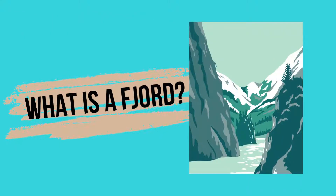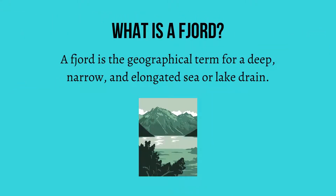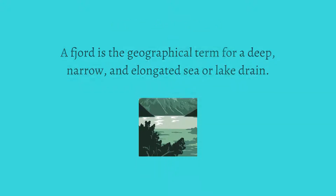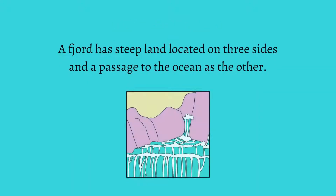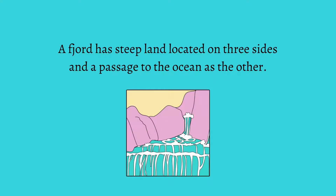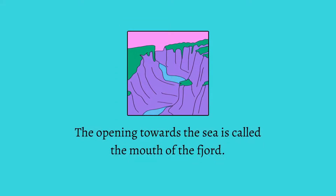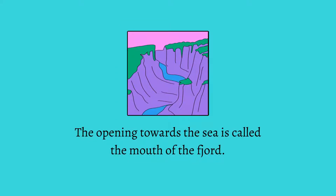What is a fjord? A fjord is the geographical term for a deep, narrow, and elongated sea or lake drain. A fjord has steep land located on three sides and a passage to the ocean as the other. The opening towards the sea is called the mouth of the fjord.